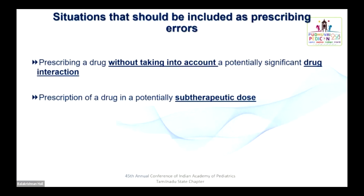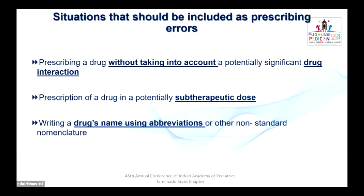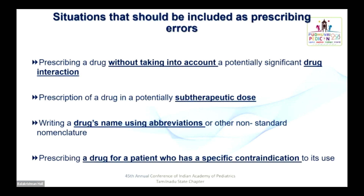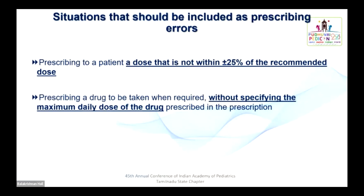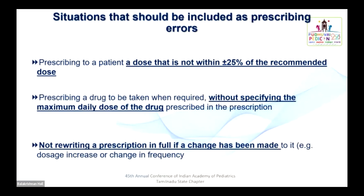Prescription of a drug at a sub-therapeutic or supra-therapeutic dose, writing a drug name using abbreviations or non-standard nomenclature, prescribing a drug for a patient who has a specific contraindication to that drug, prescribing a dose not within plus or minus 25 percent of the recommended dose, prescribing a drug 'when required' without specifying the maximum daily dose, and not rewriting the prescription fully when changes have been made — these are all prescription errors requiring correction.